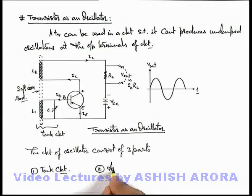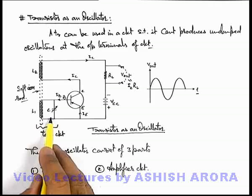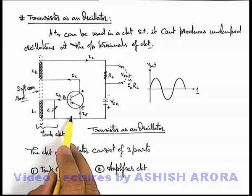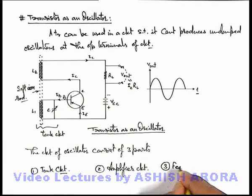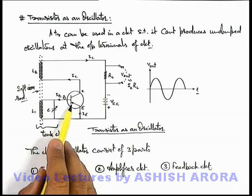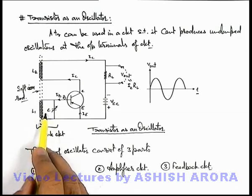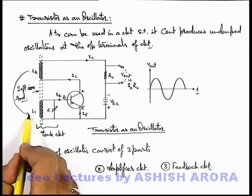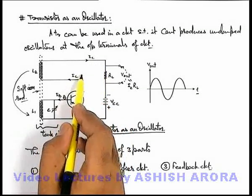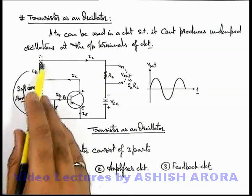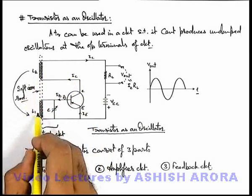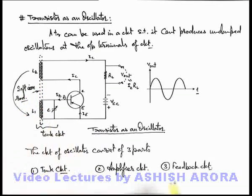The second one is obviously the amplifier circuit, which amplifies the small sinusoidal oscillations in the base-emitter circuit, and at the output terminals we get the amplified result. The third one, which is very important, is called the feedback circuit. To sustain oscillations, some energy is needed at the tank circuit, and this energy is fed by the collector part — a part of the output energy through the collector current is linked with the tank circuit via mutual induction. This part of the circuit we call the feedback circuit.